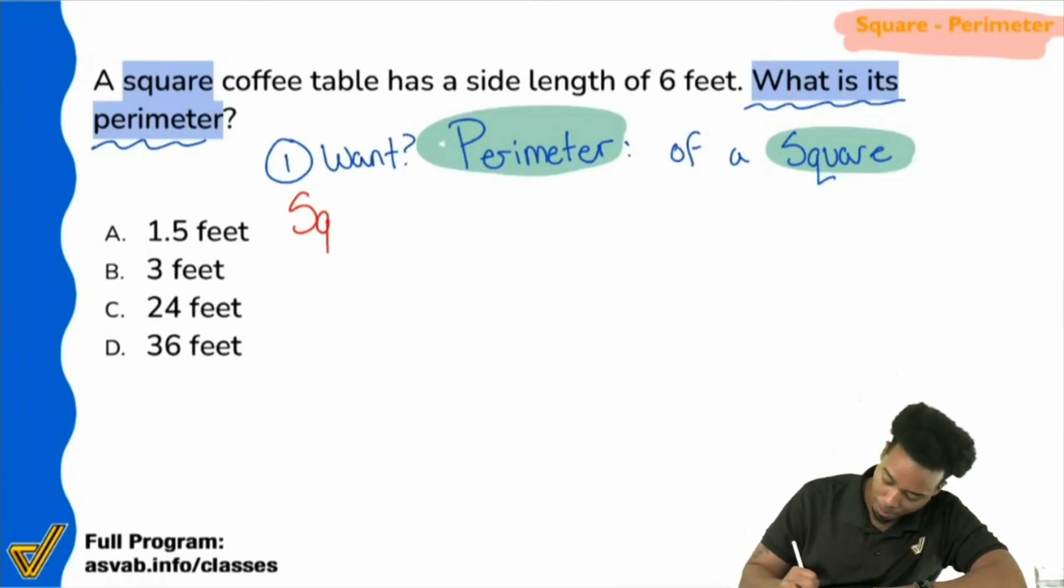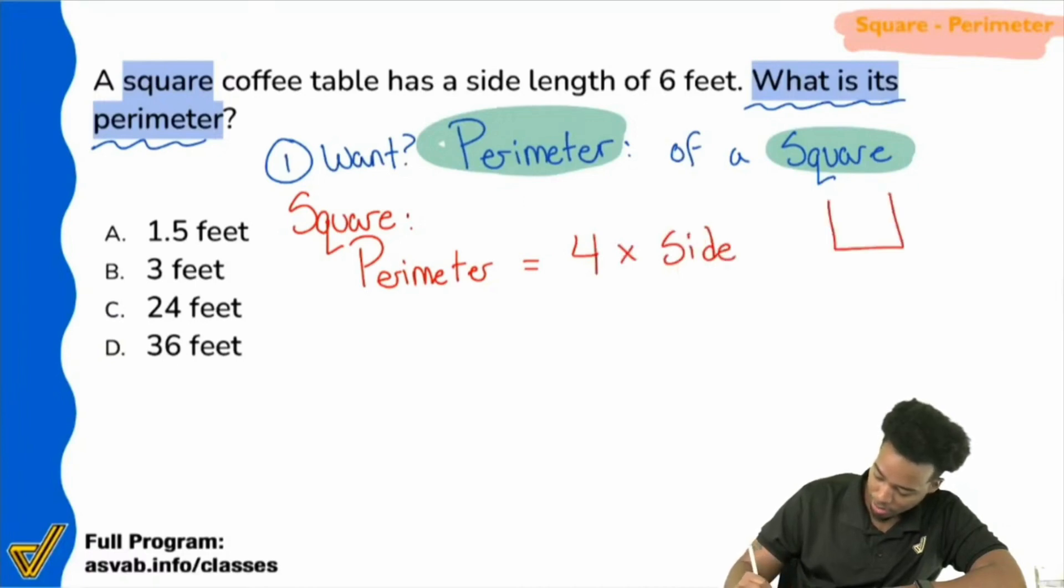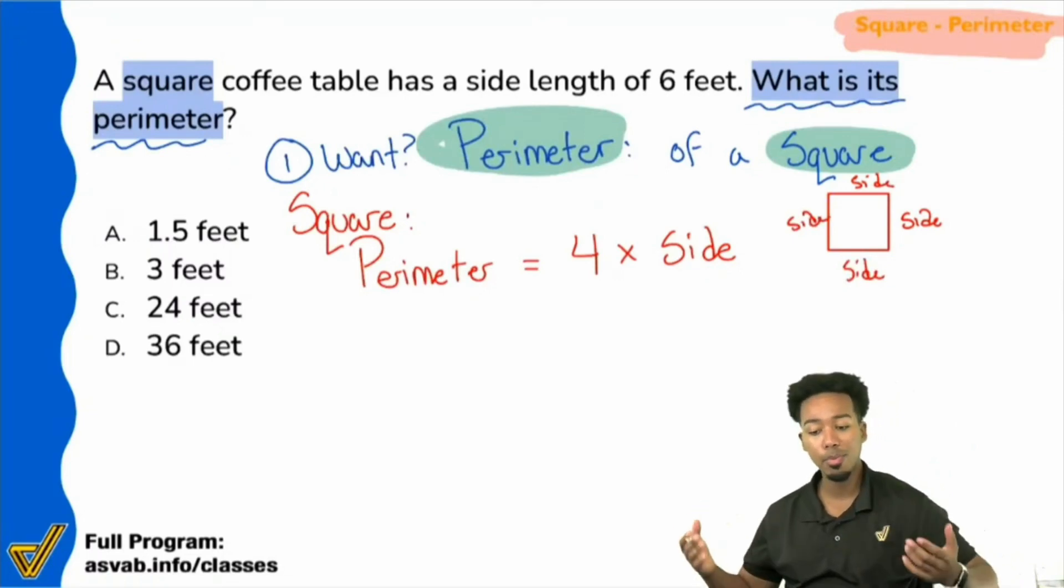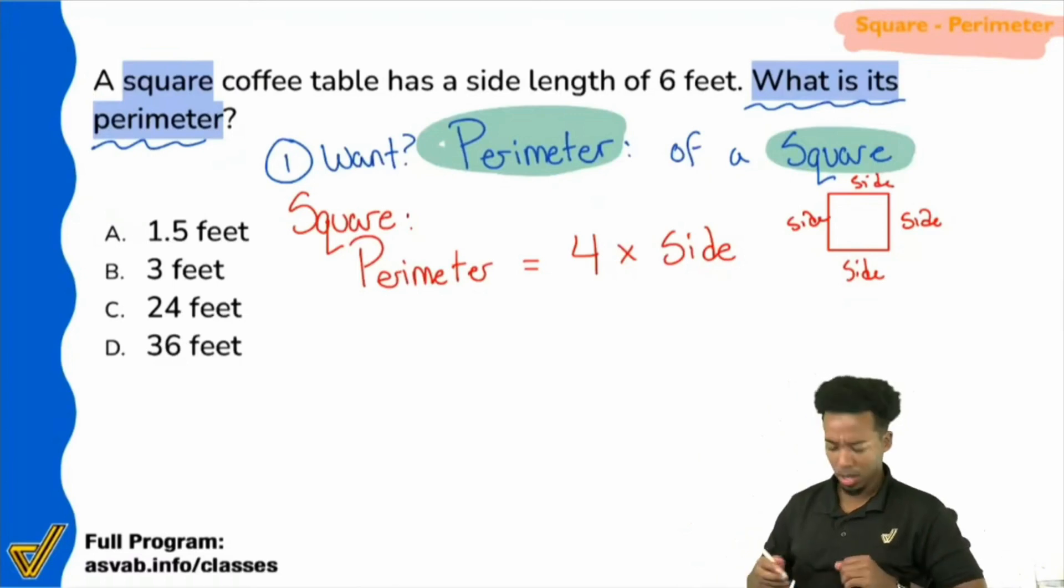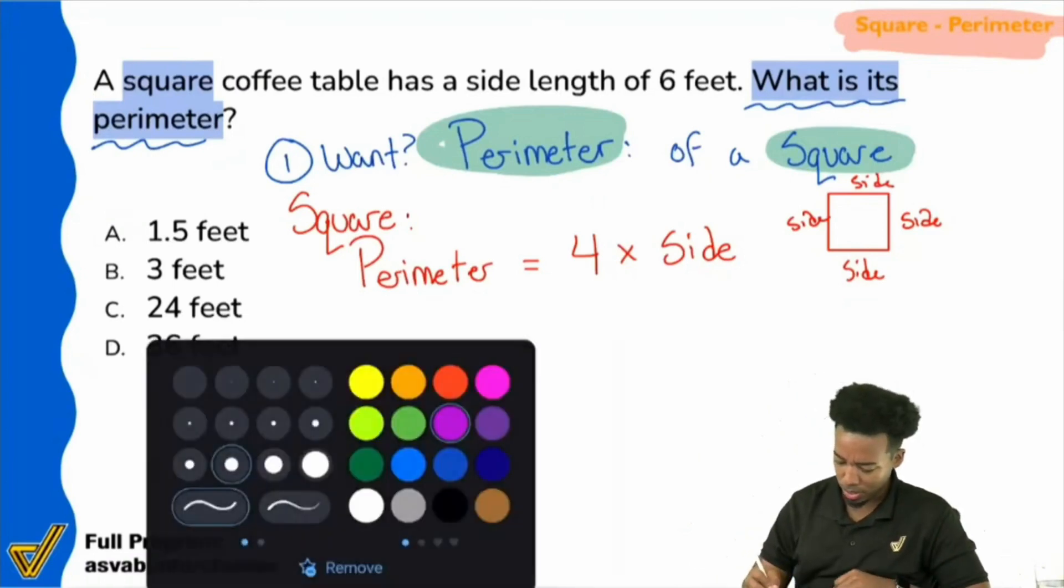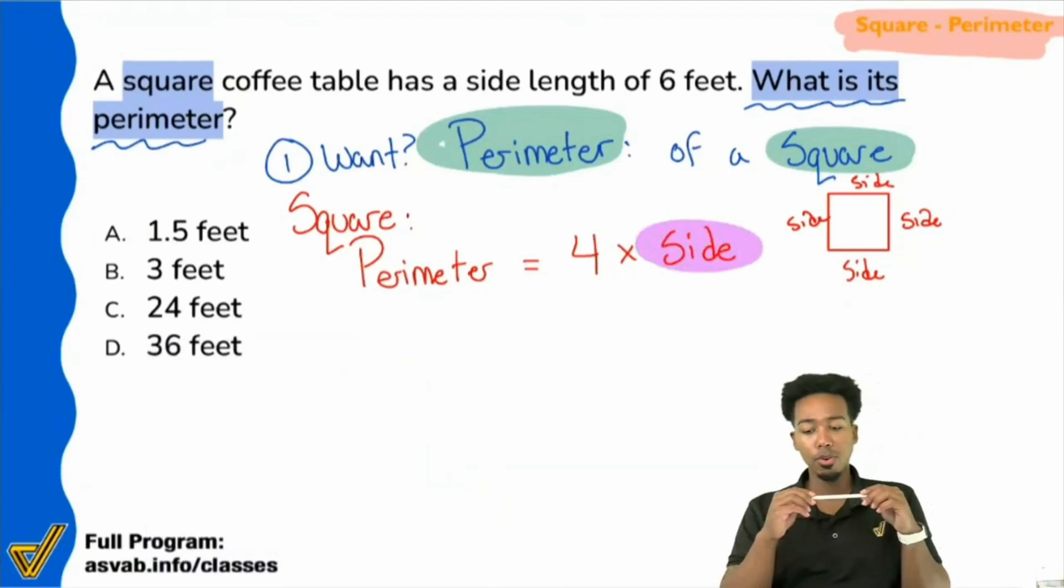Right. Exactly. We wrote this down. For a square, and this needs to pop up in your head. For a square, the perimeter equals four times the side. Right here. We have side, side, side, and side. So four of those sides together makes up the perimeter. And so in this case, everybody, to find the perimeter, what's the one thing that we need, everybody?